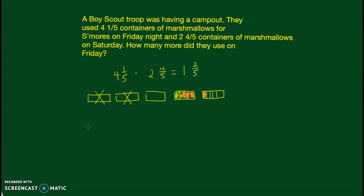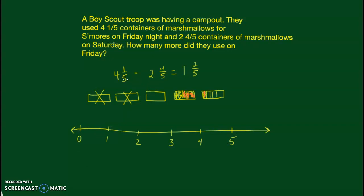Now I can also do that with a number line. It's not the straightest line, but it'll do. I'll mark zero through five. Since the pieces are in fifths, I'm going to divide each section into fifths.